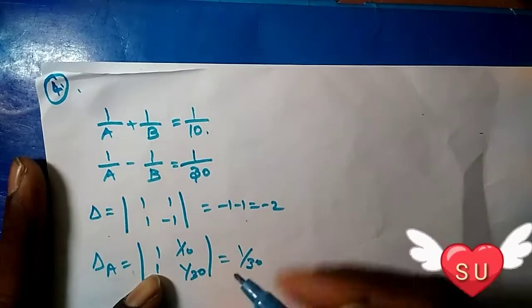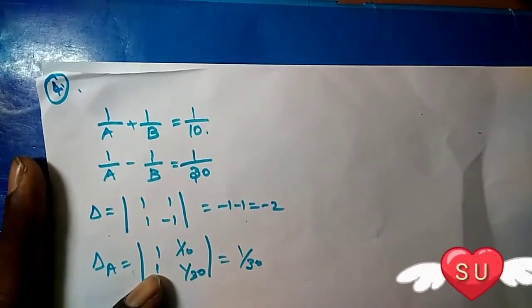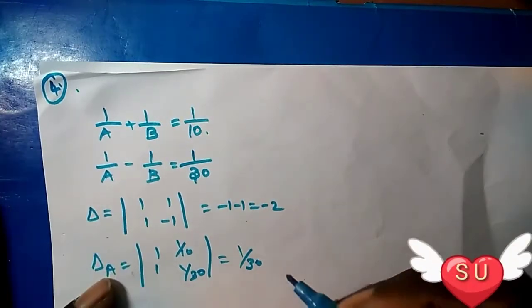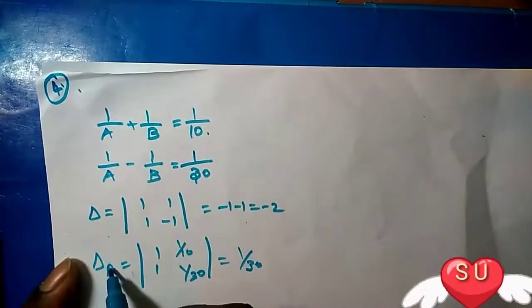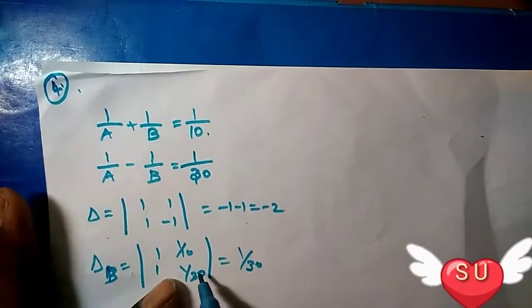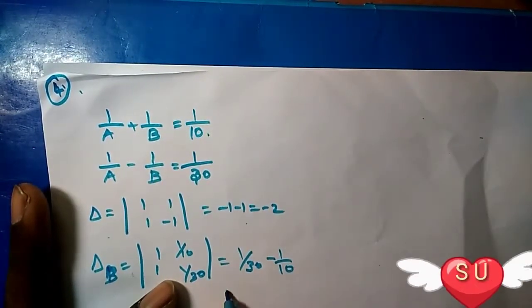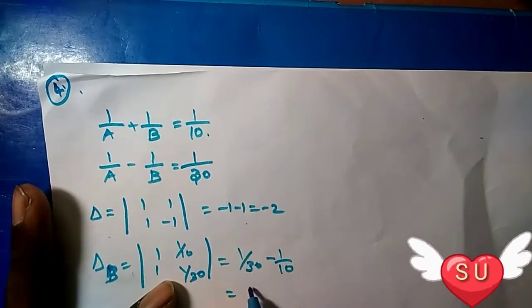This would be -1/30 - 1/10, which equals -5/30.